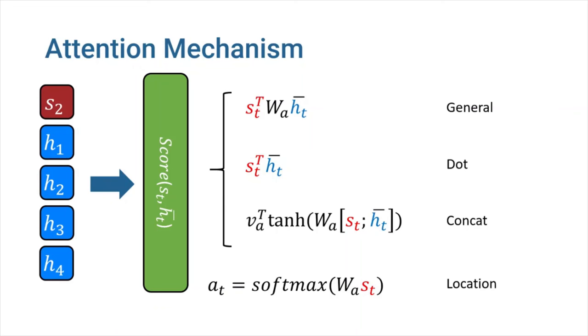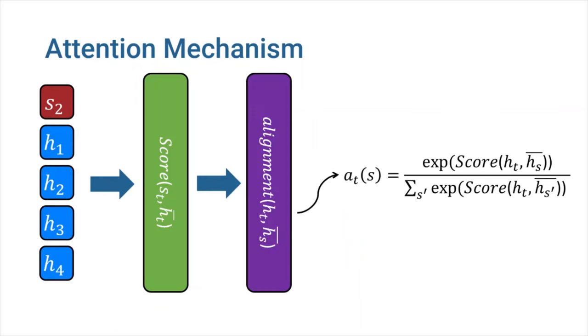There are many ways to calculate a score. Here I've outlined four options for doing so: dot, general, concat, and the location-based function in which the alignment scores are computed from solely the target decoder state. Next step is to calculate the alignment vector. As the formula in this slide shows, we should simply use softmax function to convert our score values into probabilities.